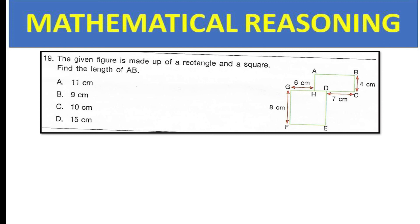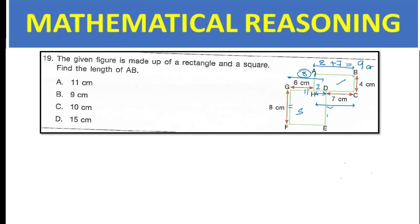The given figure is made up of a rectangle and a square. Find the length of AB. Since the inner shape is a square, all its sides are equal. If GF is 8, then GD is also 8. We already know GH is 6, so the remaining HD is 8 − 6 = 2 cm. DC is 7 cm, so AB = HD + DC = 2 + 7 = 9 cm — option B. Remember the properties of figures.